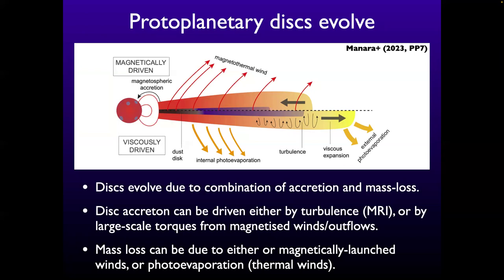The talk has three parts. The first two parts are disk evolution — looking first at winds and then at accretion. The last part I'll talk a bit about planets, disks, tilts, warps, and looking for signatures.